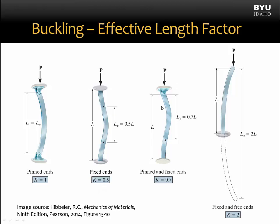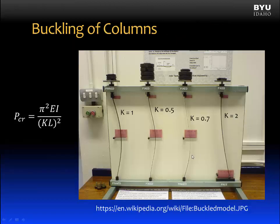When we have a pinned-fixed end condition, like the member on the left in the demonstration, then the effective length factor is 0.7. If we have a fixed-free member, then the effective length is double the actual length of the member, so k is equal to 2.